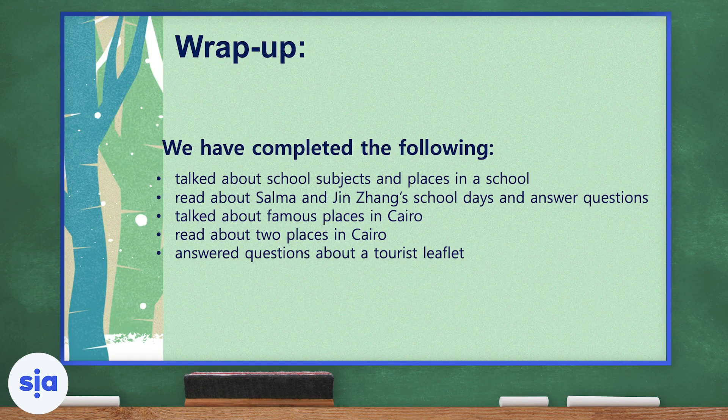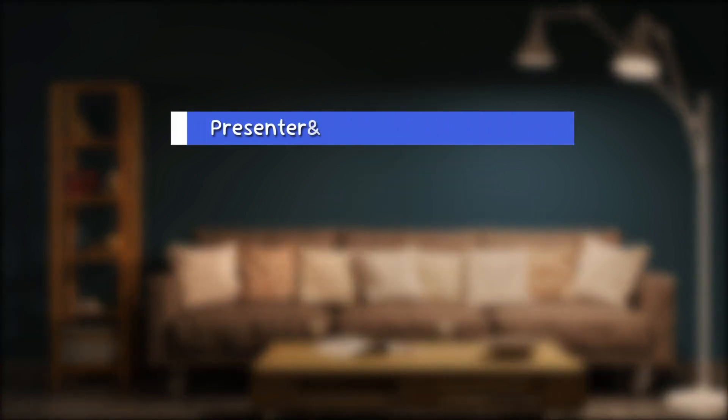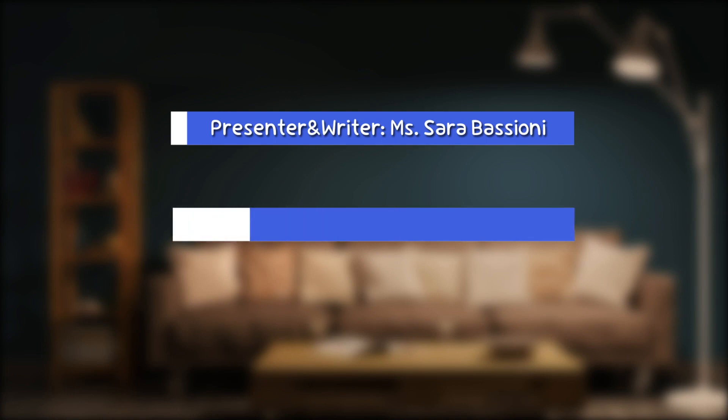Okay, we're going to wrap up. Today we completed the following: we talked about school subjects and places in a school, we read about Salma and Yin Zhang's school days and answered questions, we talked about famous places in Cairo, and we read about two places in Cairo. Thank you, everyone. This was Miss Abasyouni. Have a wonderful day. Thank you.